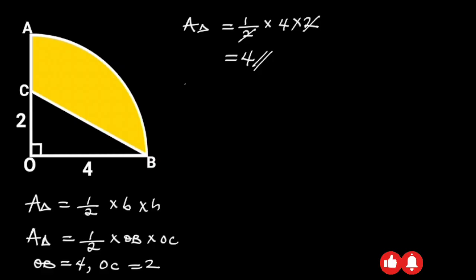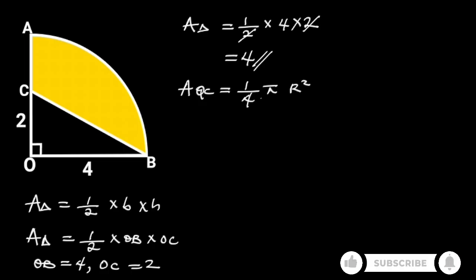Next, let's find the area of the quarter circle. The area of a quarter circle is given as 1 over 4 pi radius squared. Since the radius of the quarter circle is 4 units.